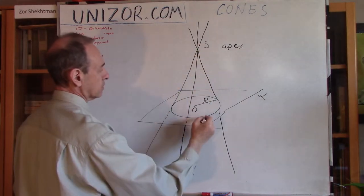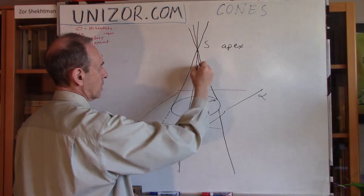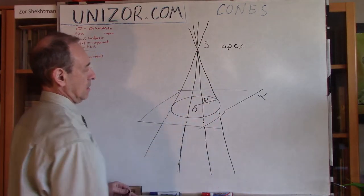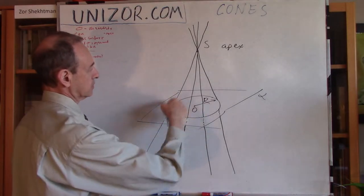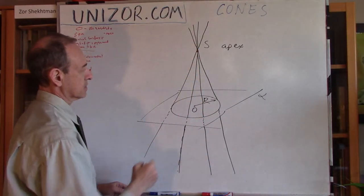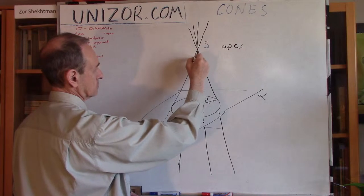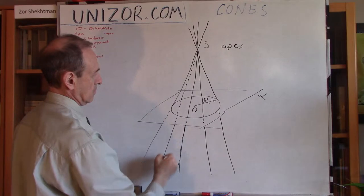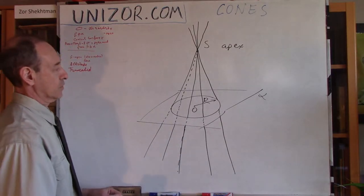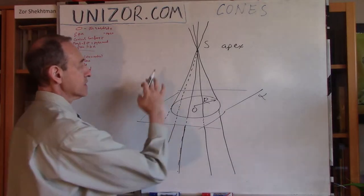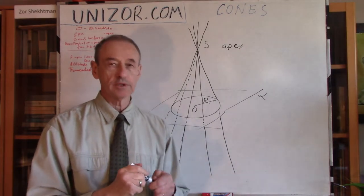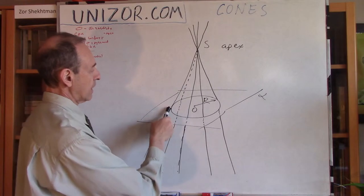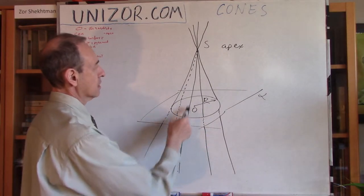Something like this. So, every point on a circle is connected with the apex. Something like this. So, this is the conical surface which is a result of connecting every point on a directrice with an apex.